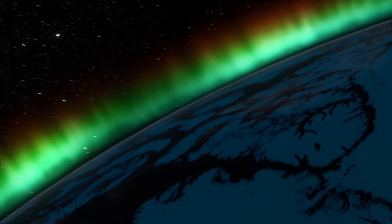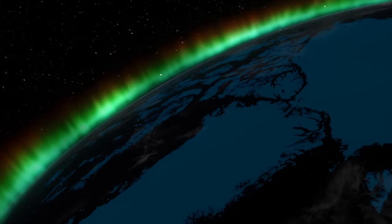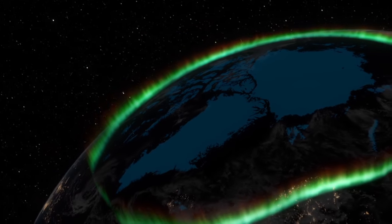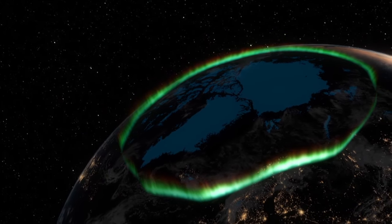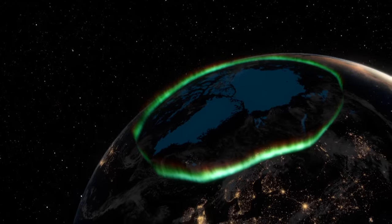The result is a dazzling dance of green, blue, white and red light in the sky, forming in a ring-shaped area called the aurora oval.